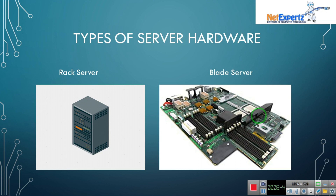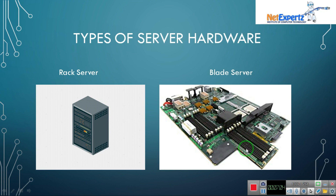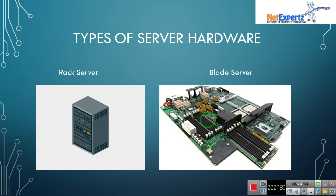The blade server is the older technology. As you can see, it has a large number of RAM slots — for example, six slots on each side, totaling 12 slots. If I place 8 GB RAM sticks in all 12 slots, that's 96 GB total. It also has two processor sockets visible, and can support up to 64 processors maximum. But blade server is old technology.